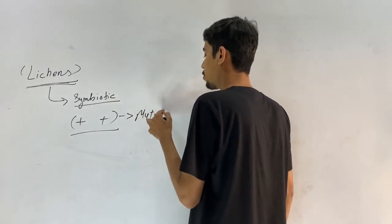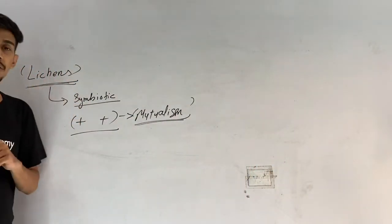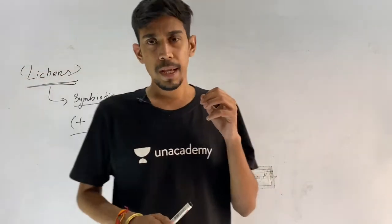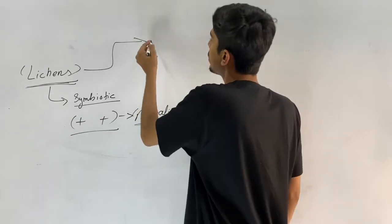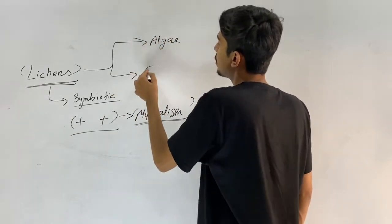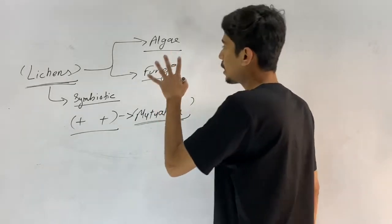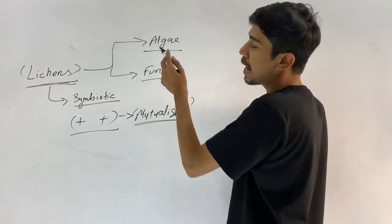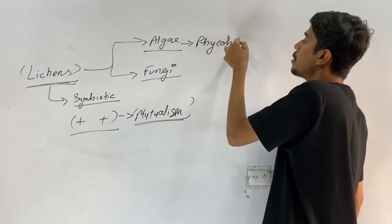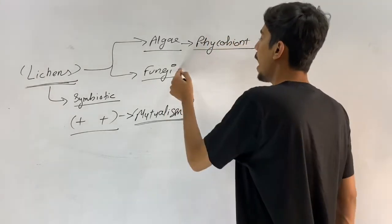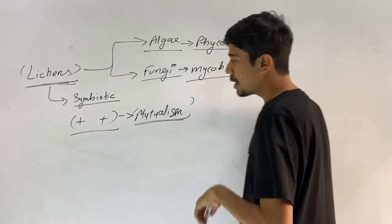This type of relationship is also called mutualism — mutually beneficial for both, a plus-plus symbiotic relationship. In a lichen, there are two interacting species: algae and fungi. The algal component is called the phycobiont, and the fungal component is called the mycobiont.